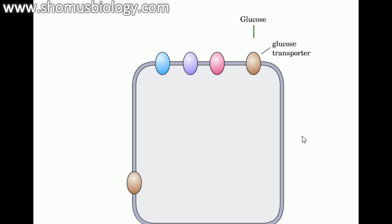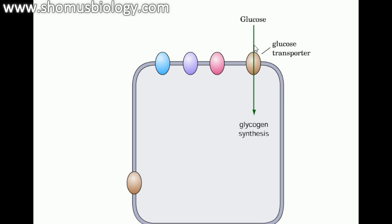In the liver, glycogen synthesis is stimulated directly by glucose. Glucose can inhibit the glycogen phosphorylase enzyme by binding to its T (tense) state, preventing glycogen phosphorylase from breaking down glycogen into glucose. This is logical: if you already have adequate glucose, you need to stop the degradation of glycogen.